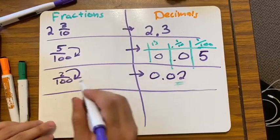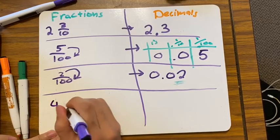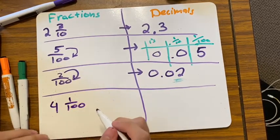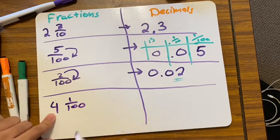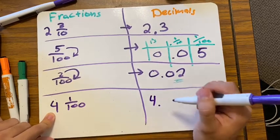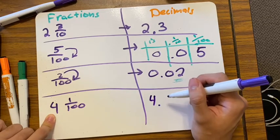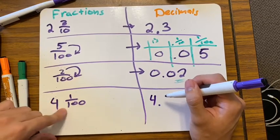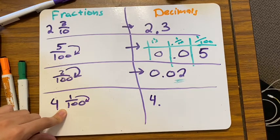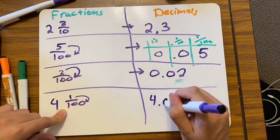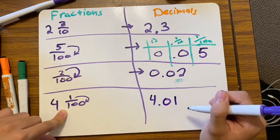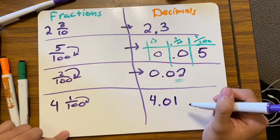Let's do four wholes and one hundredth. This time I do have a whole number: four. Four point — my one goes in the hundredths place, so I have nothing in the tenths and my one is in the hundredths. The answer is 4.01.